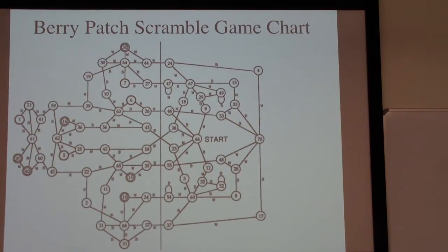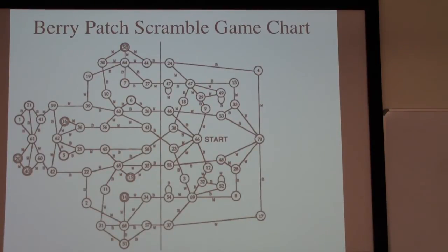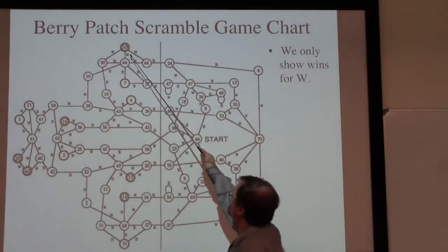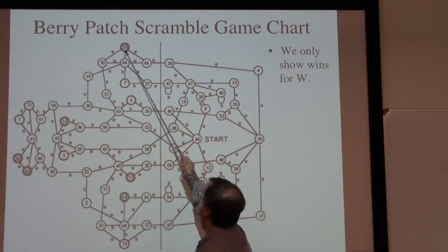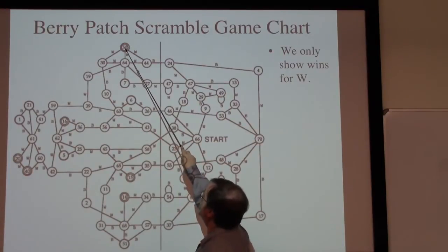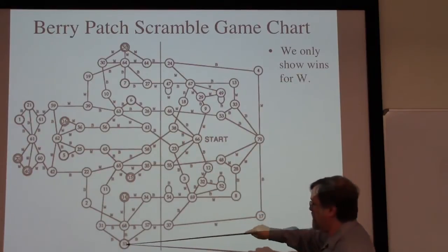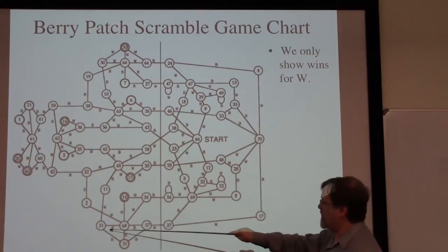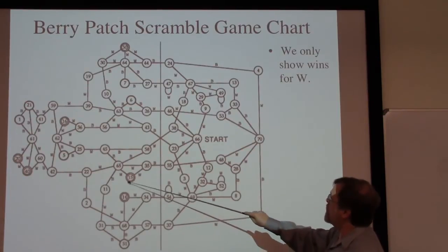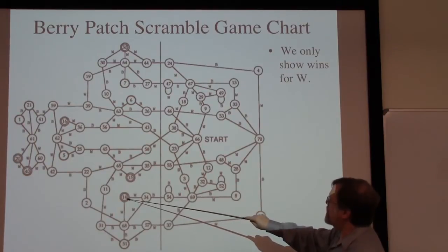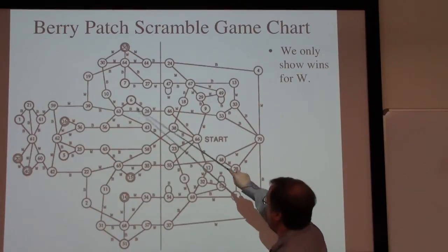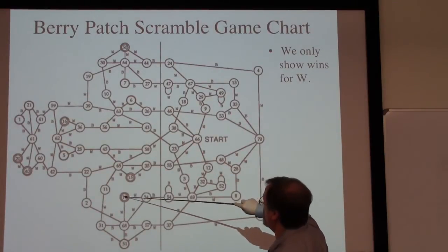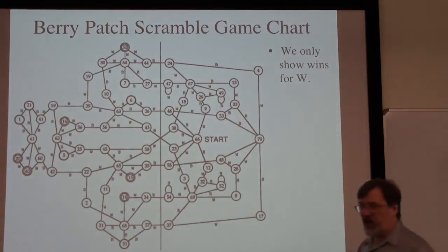Here is the game chart for Berry Patch Scramble. It's substantially larger — the largest number here is 70, so there are 70 different states in this game, which is about as big as we're going to be able to fit on a single sheet of paper. Here we're only showing the wins for white: this is a win for white because we have all white edges coming in and no black edges going out, so if we can get to this position, black has no moves. There's a symmetric one here in which black goes in with no white edges coming out. We're only showing the white winning states, but they always correspond to an equivalent black win state.